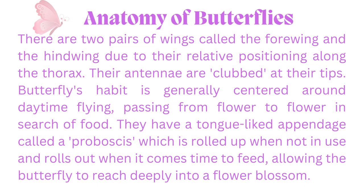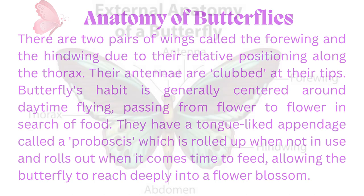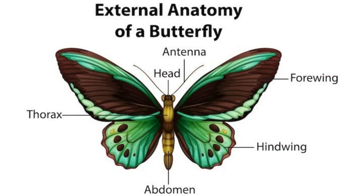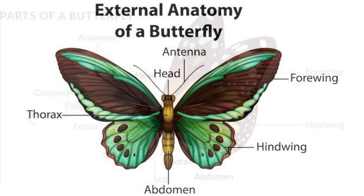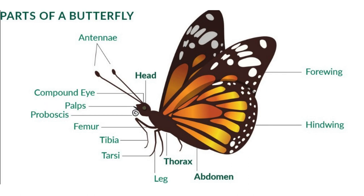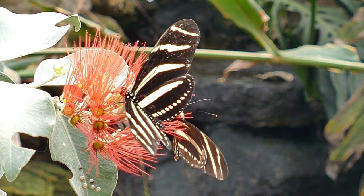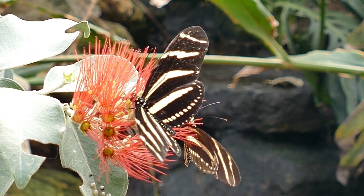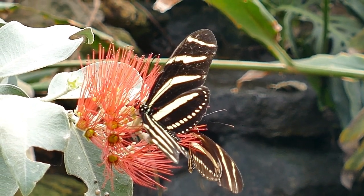These patterns serve multiple purposes: protection from predators, coat shape, and body temperature regulation. In the anatomy of butterflies, there are two pairs of wings called the fore wing and the hind wing, due to their relative positioning along the thorax. Their antennae are clubbed at their tips. Butterflies' habits are generally centered around daytime flying, passing from flower to flower in search of food. They have a tongue-like appendage called a proboscis, which is rolled up when not in use and rolls out when it comes time to feed, allowing the butterfly to reach deeply into the flower blossom.